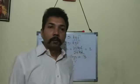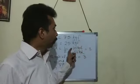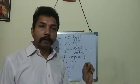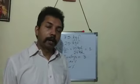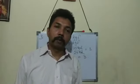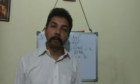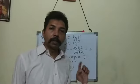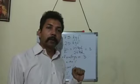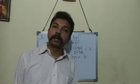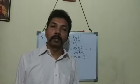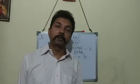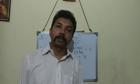To summarize: for finding mechanical advantage we use the formula load upon effort; for finding velocity ratio of a block and tackle system, velocity ratio equals number of pulleys; and for finding efficiency, efficiency equals MA upon VR multiplied by 100 percent. These are all very simple numericals — just write the formula, substitute the values, and you will get the answer.